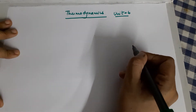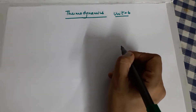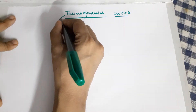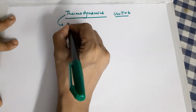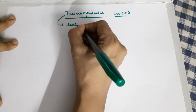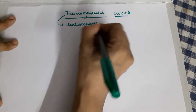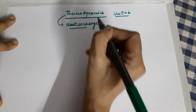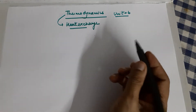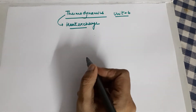Why do we have thermodynamics in chemistry? The reason is that thermodynamics is a stream of science which deals with heat exchange. That is the dynamic, the changing thing in thermodynamics. So when you want to talk about heat exchanges, we call it thermodynamics.